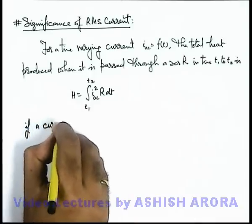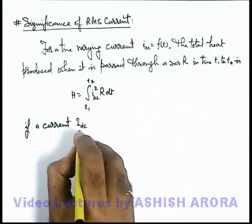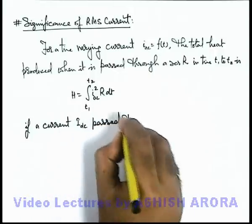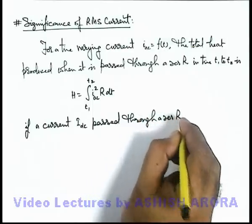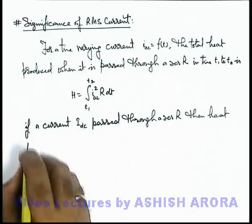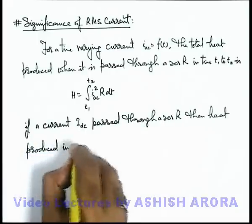a current idc, which is a direct current, pass through a resistance R, then heat produced in same time